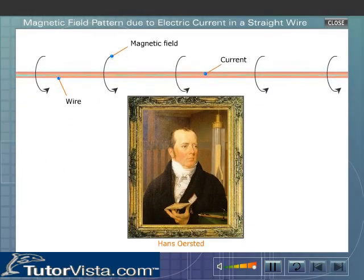Hans Orsted discovered the magnetic effect of current in 1820. The magnetic field around a straight conductor can be mapped by using iron filings.